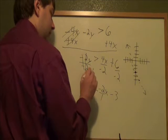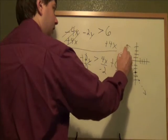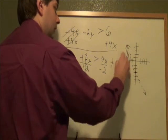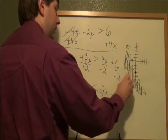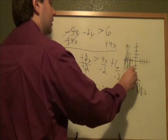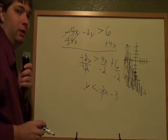And then, because this is y is less than, we are going to shade under it. Don't think about left and right, just think less than is under the line, greater than is above the line. And that is the graph of that linear inequality.